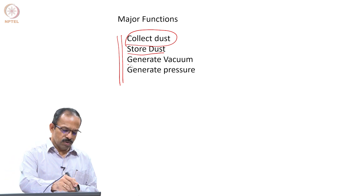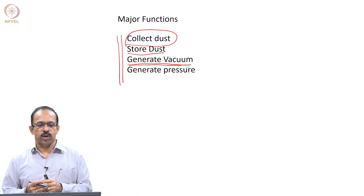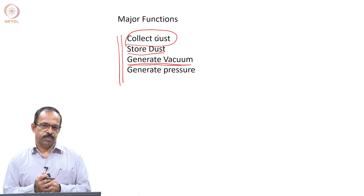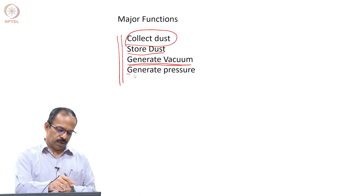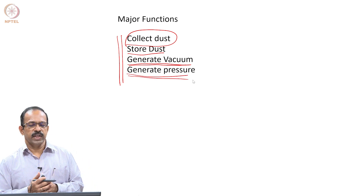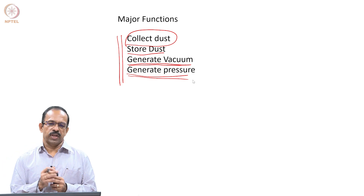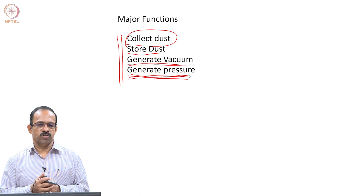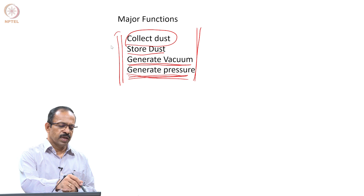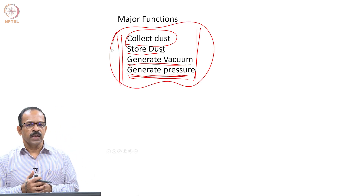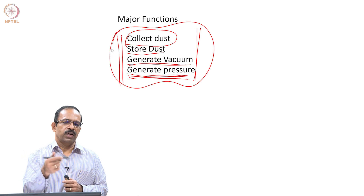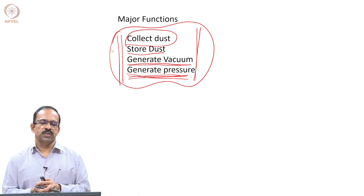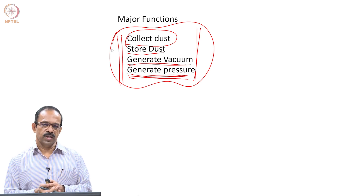To collect the dust, you need to generate vacuum. An additional function that most vacuum cleaners have is a blowing option — you can actually blow air, and for that you need to generate pressure. So these are the main functions of the product. You need to see how the different parts in the product are enabling or supporting these functions — that is what you need to do in the exercise.